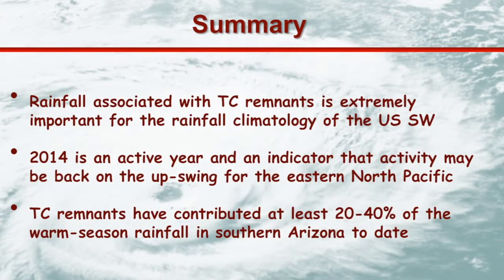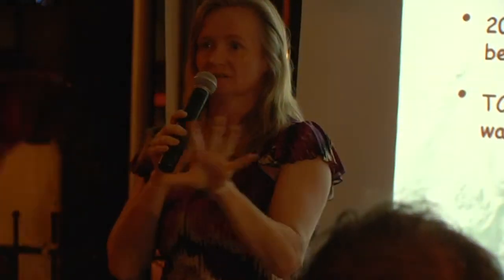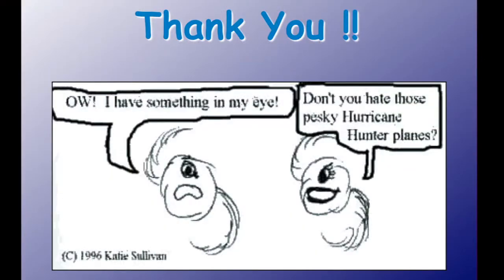In summary: the rainfall associated with these remnants is extremely important for our water climatology. 2014 is still a very active year and it's not done yet — it's an indicator that we may be back on the upswing for the eastern North Pacific in terms of tropical cyclone activity after quite a long lull. TC remnants this year have contributed at least 20 to 40 percent of the warm season rainfall in southern Arizona. Thank you, and I'm happy to entertain any questions.